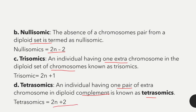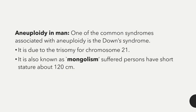One of the common syndromes associated with aneuploidy is Down syndrome, caused by trisomy of chromosome number 21. This causes intellectual disability and developmental delays. It is also known as mongolism. The affected person has a short stature of about 120 cm.